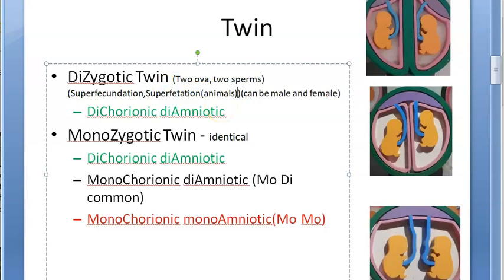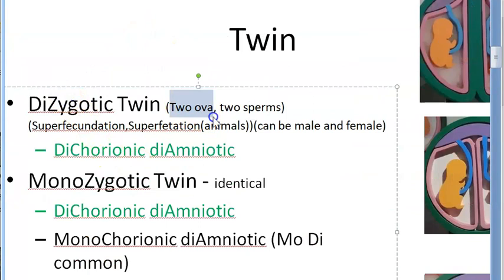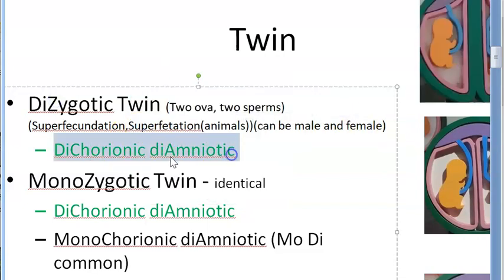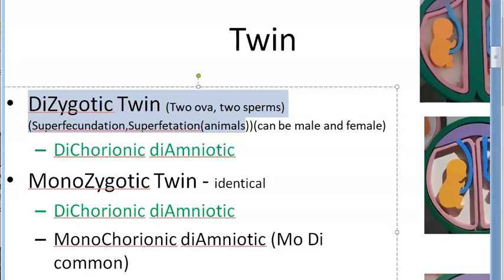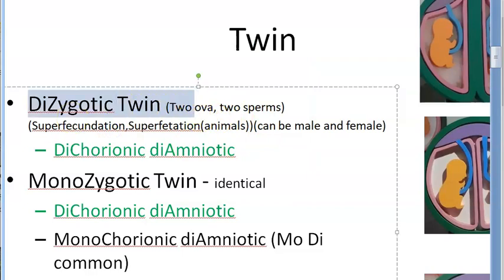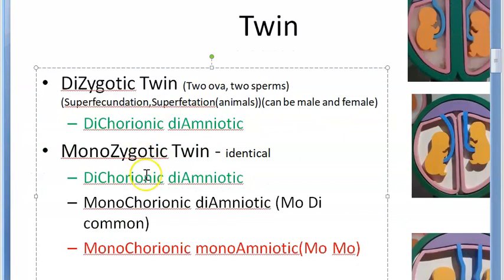To summarize dizygotic twins: two ova, two sperms, bin ovular. The two zygotes implant separately, each with their own placenta and amniotic sac — dichorionic diamniotic. These twins are genetically different, more like brother and sister. They are called fraternal twins. Fraternal twins, bin ovular twins, and dizygotic twins are all the same thing.